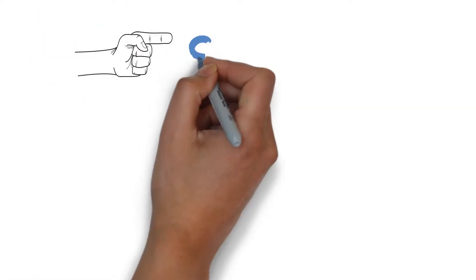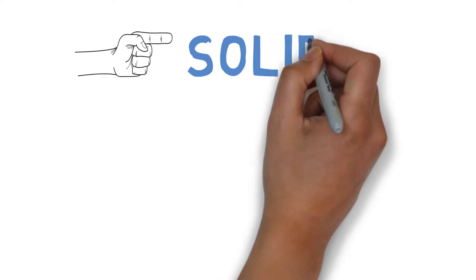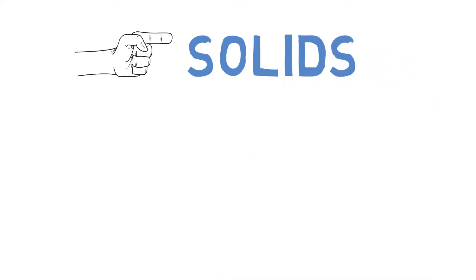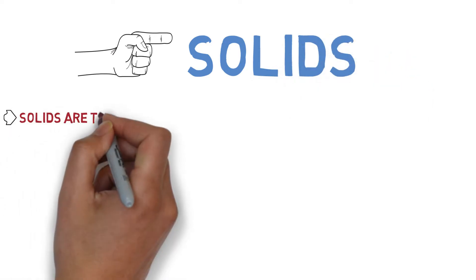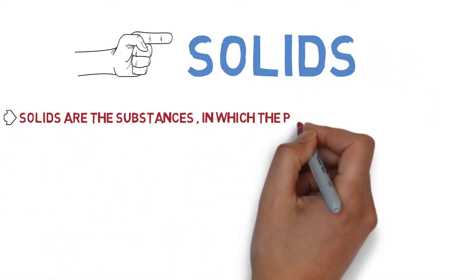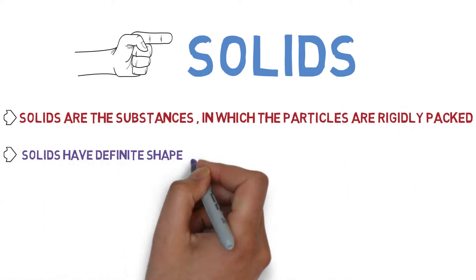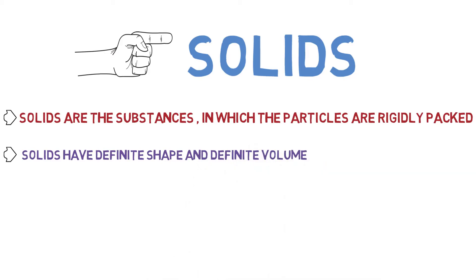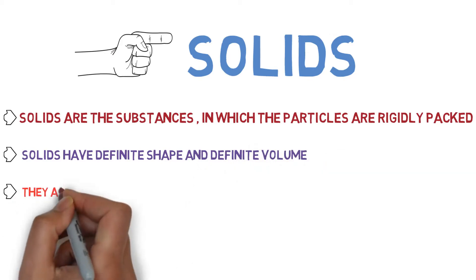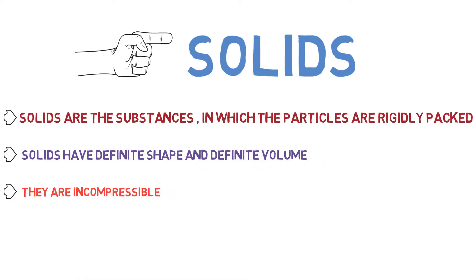First of all, we should know about solids. What are solids? Solids are the substances in which the particles are rigidly packed. They have definite shape and definite volume, and they are incompressible.